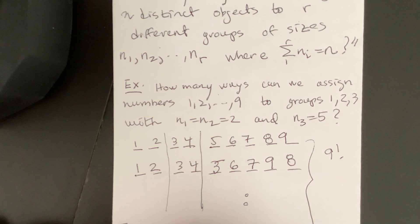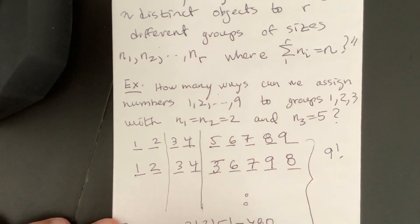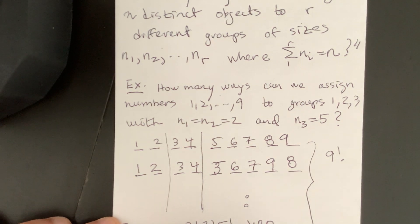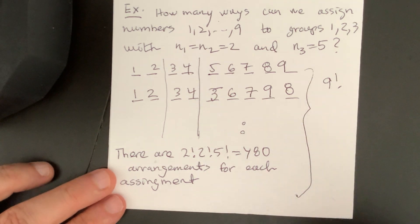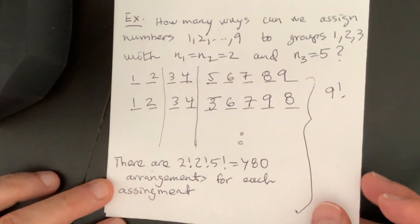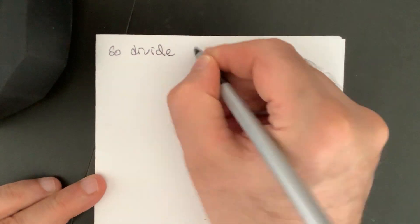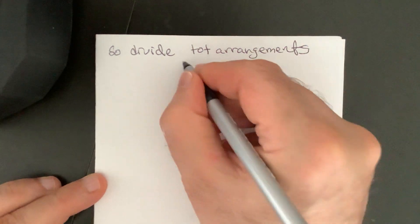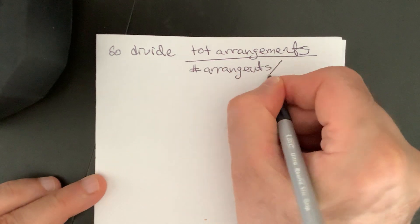There are 2 factorial, 2 factorial, 5 factorial equal 480 arrangements for each assignment. So therefore, if we divide the total number of arrangements by 480, we should get the number of assignments. So divide total arrangements, permutations, by number of arrangements per assignment. And then the assignment will come up to up top, right?